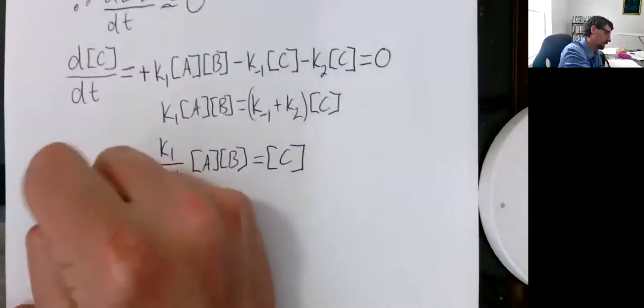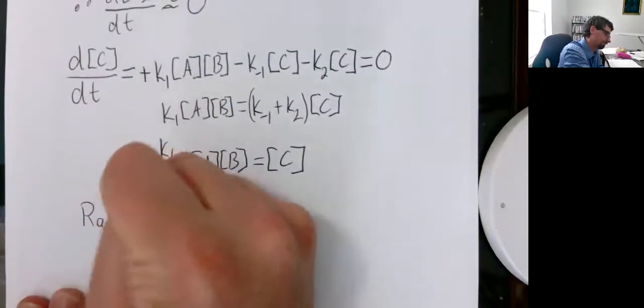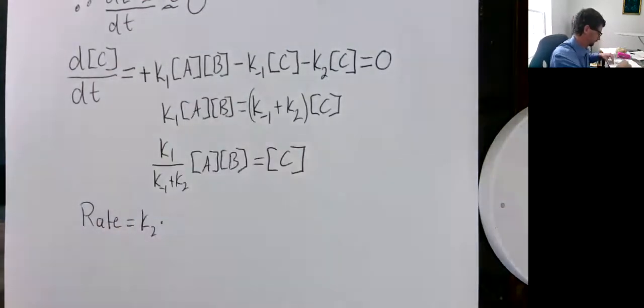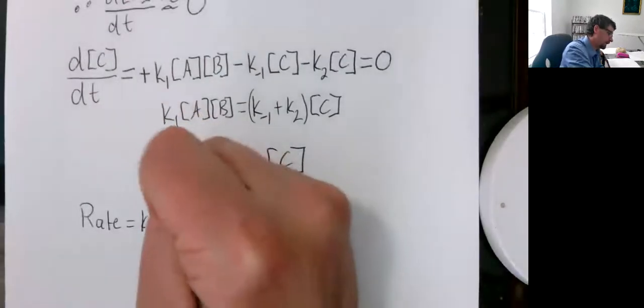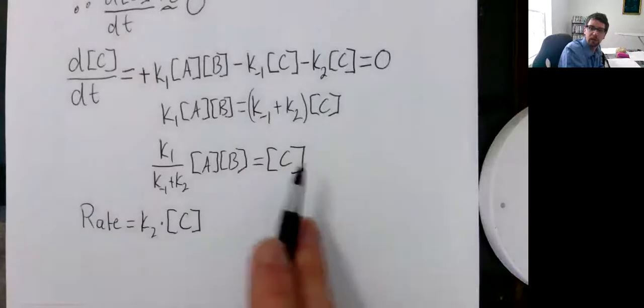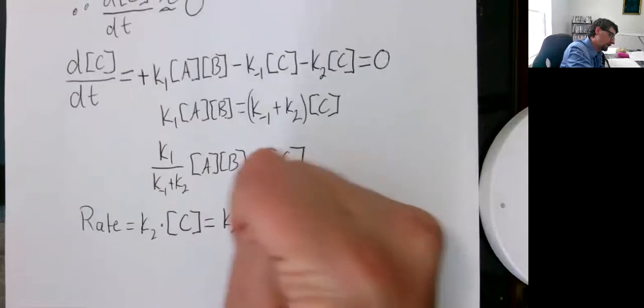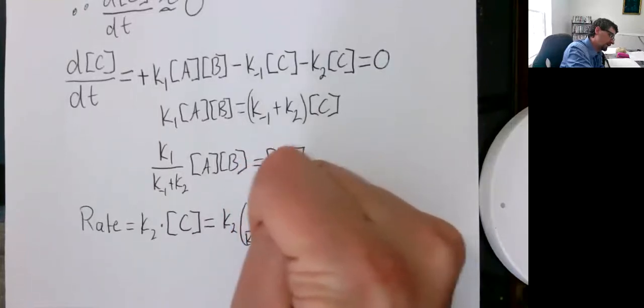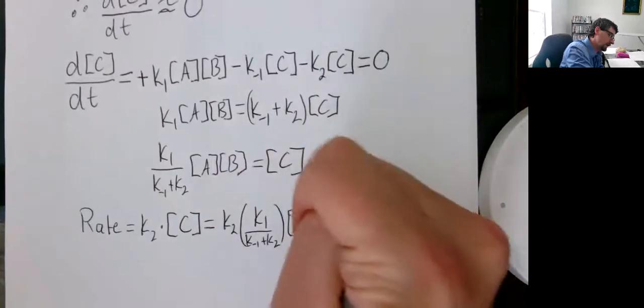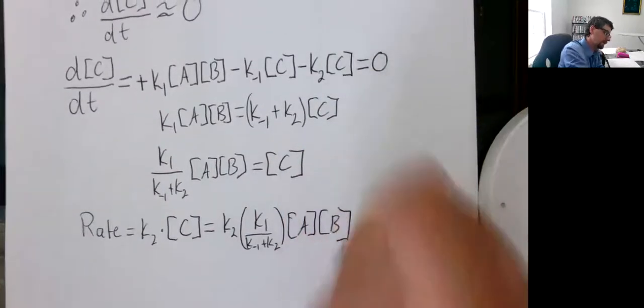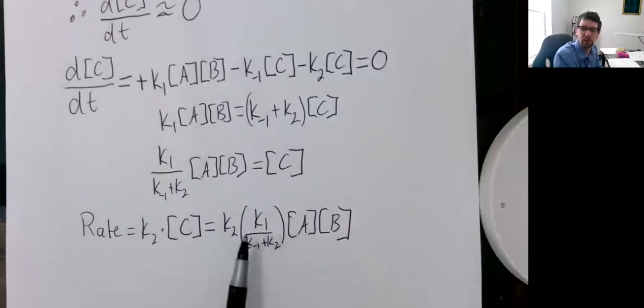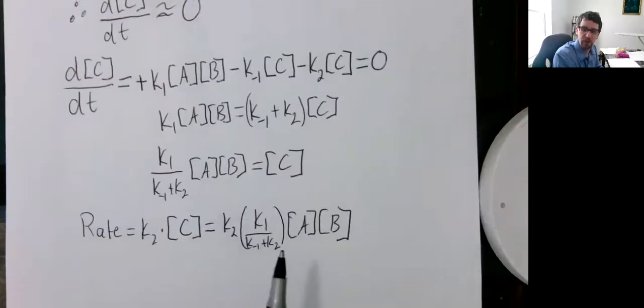So let's go back to our rate expression, or rate law. And now we can plug in because we have an expression for C. So we get K sub 2 times K1 over K-1 plus K2 times A times B. We can clean that up a little bit nicer, but if you notice, we have an addition along the bottom in that denominator there, and this would be the rate expression utilizing the steady state approximation.